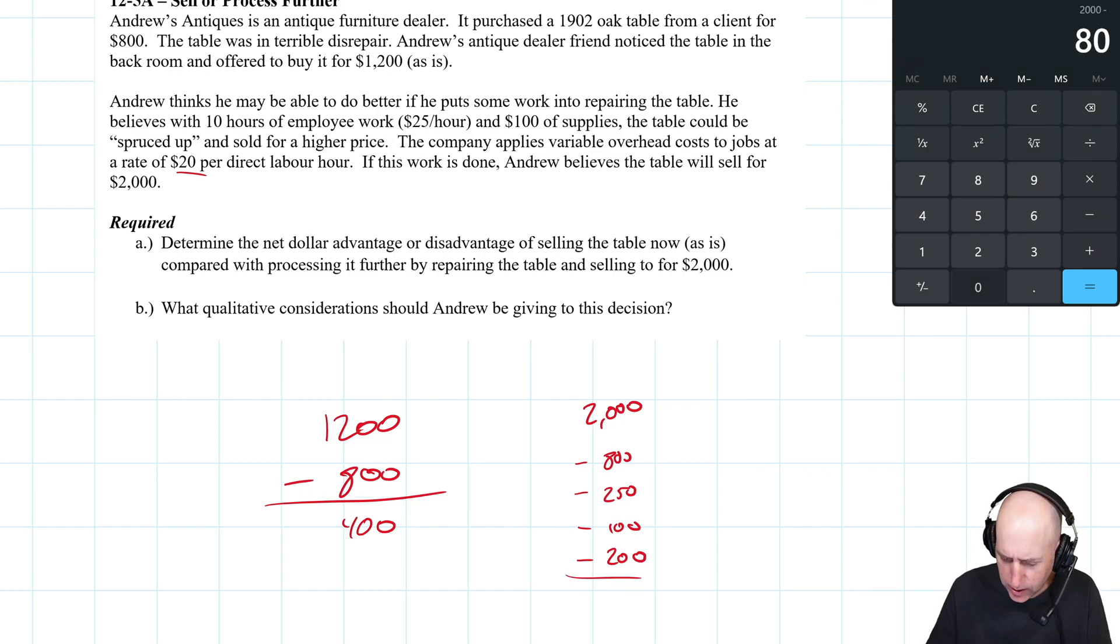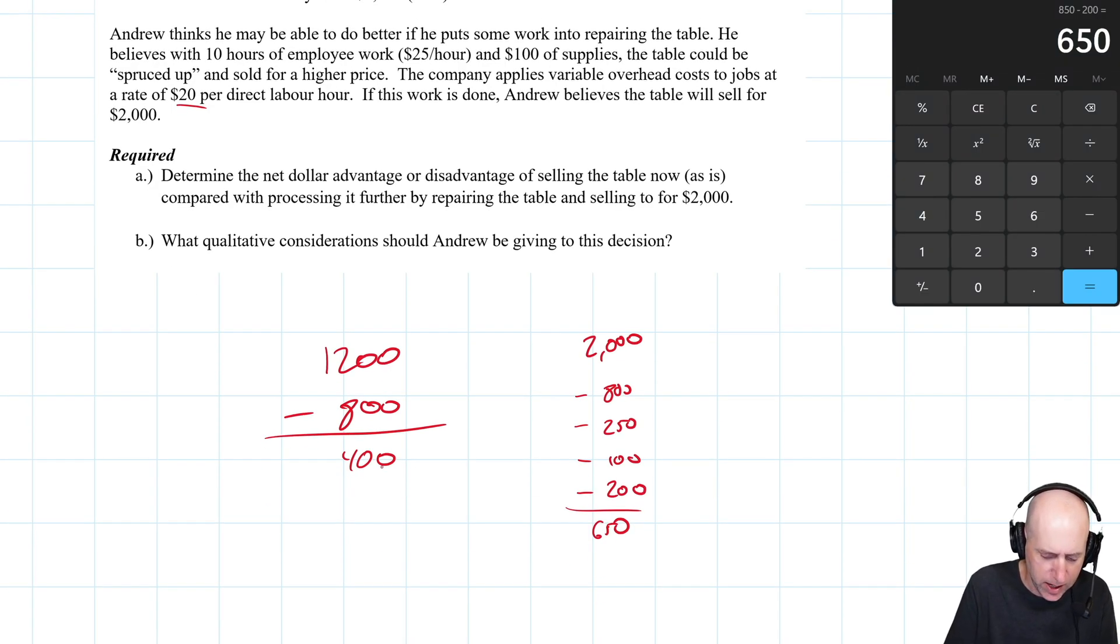$650. So we're at $650 if we take the money today. We make $400. If we do the work, we think we can make $650. There's a $250 difference. Let's see, determine the net dollar advantage or disadvantage of selling the table now. $250 disadvantage.